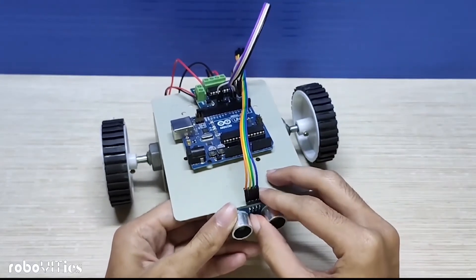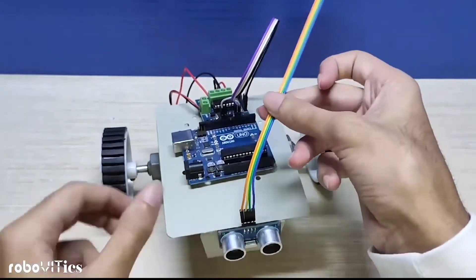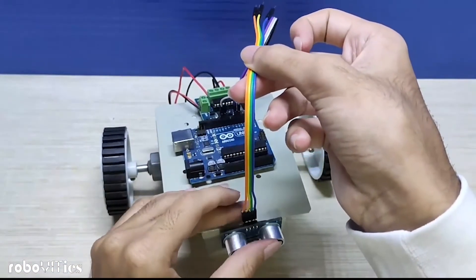Remember that the transmitter and receiver have to be placed towards the front of the bot so that it can actually detect obstacles.